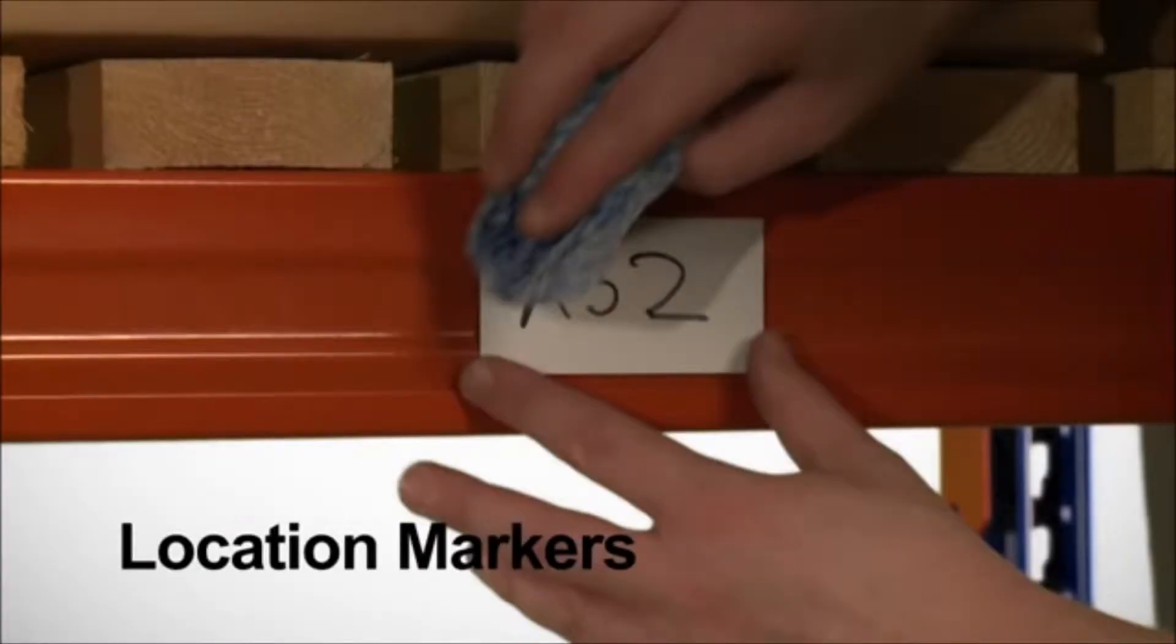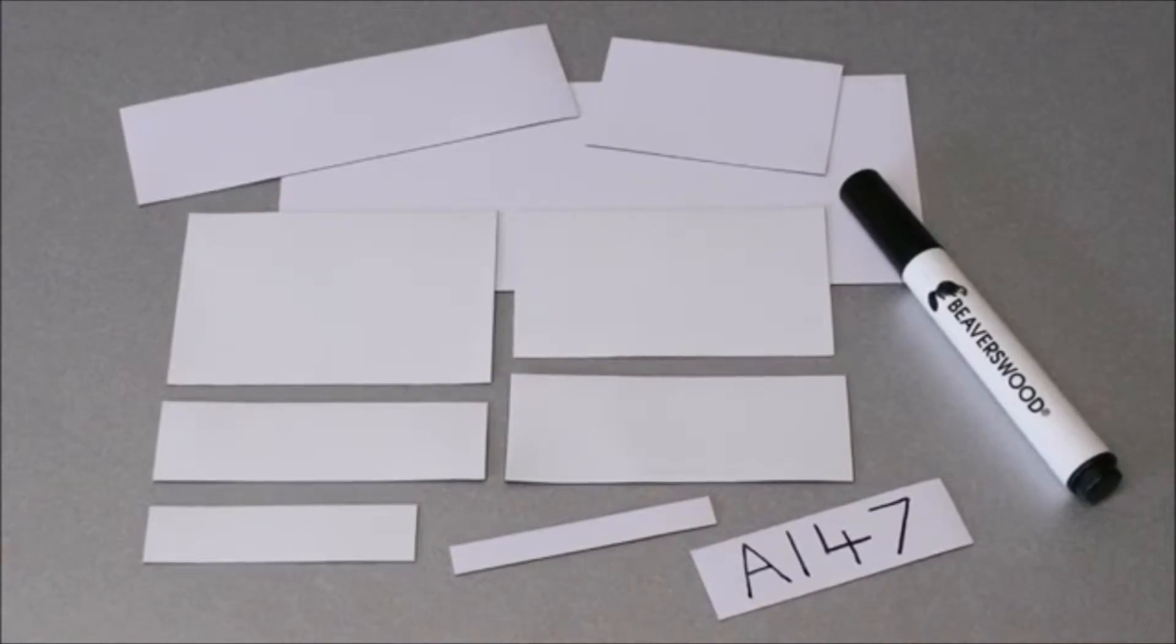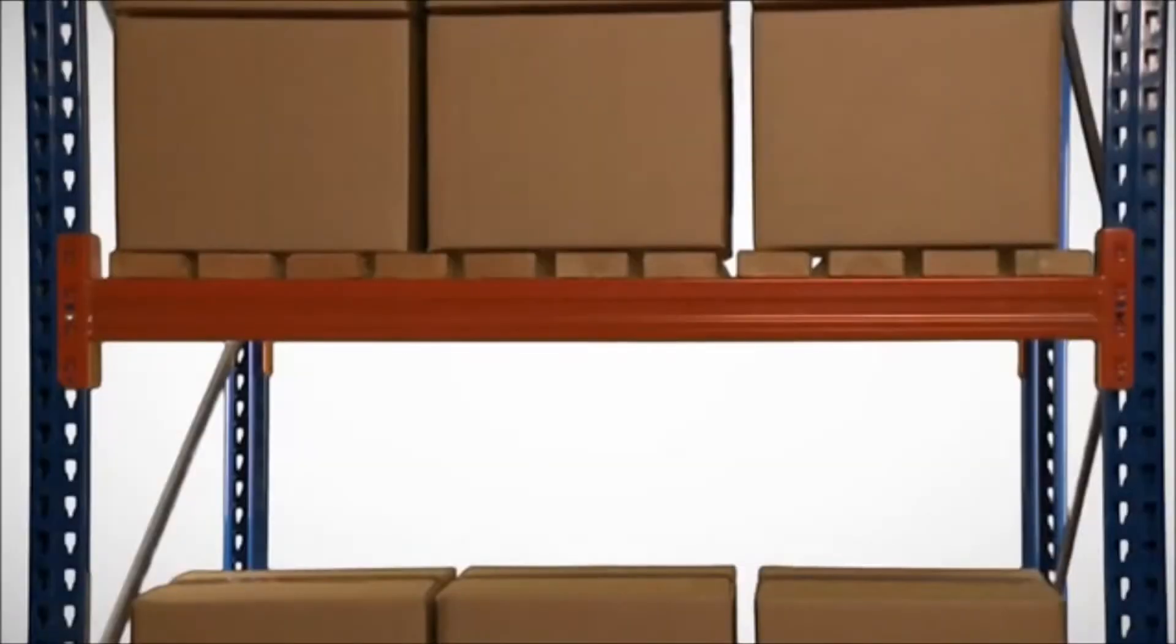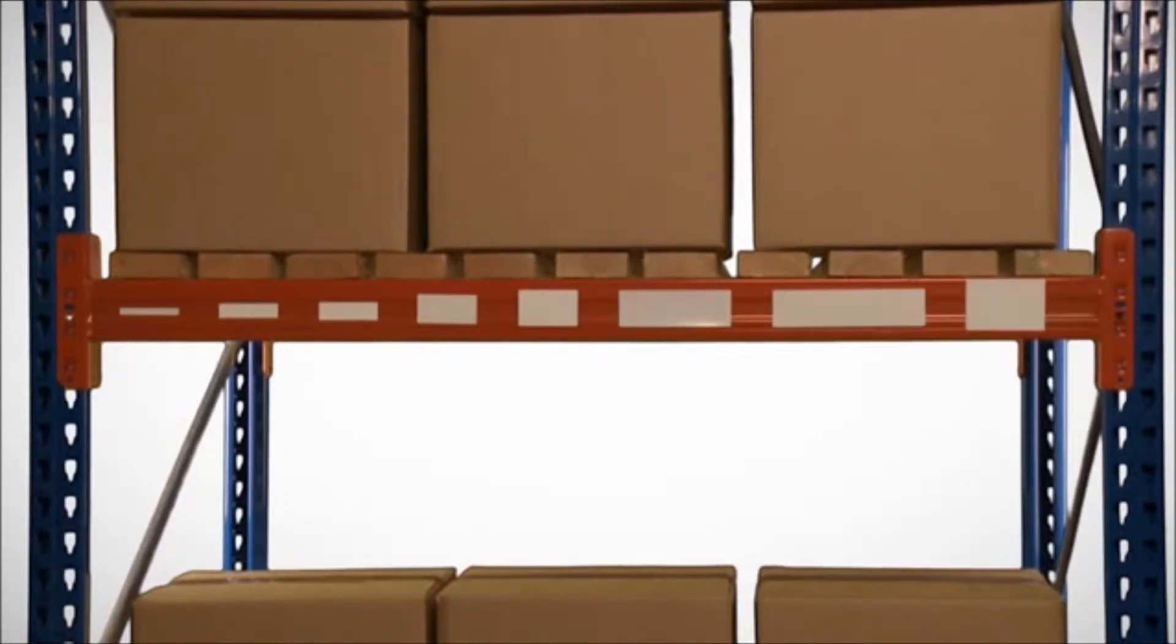Location markers are pre-cut white-faced magnetic rectangles for rack and beam identification. With over 20 popular sizes from 10 by 80 mm up to 100 by 200 mm, they're certainly going to be a size that suits your needs.